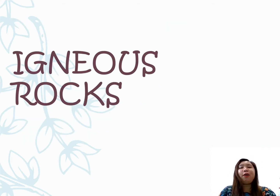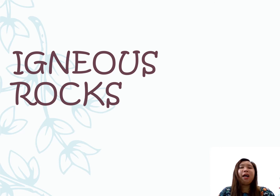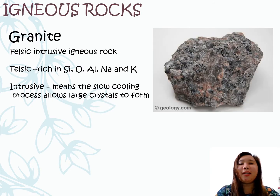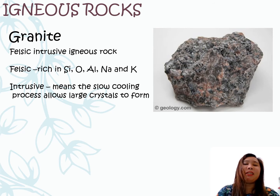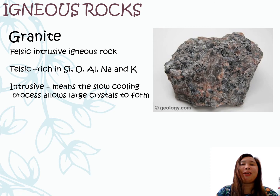Let us now take a look at the different examples of igneous rocks and their mineral content. One example of igneous rock is the granite. It is a felsic-intrusive igneous rock. Felsic means that it is rich in silicon, oxygen, aluminum, sodium, and potassium. While intrusive means that this slow-cooling process of magma tends to form large crystals in this kind of rock.